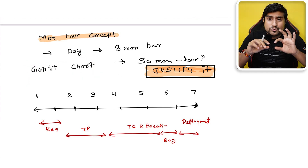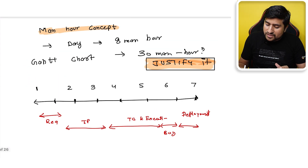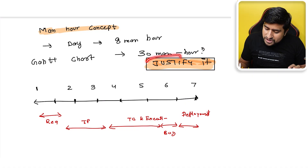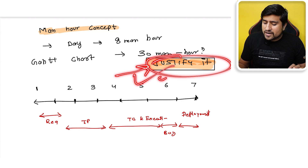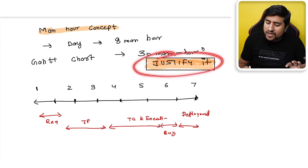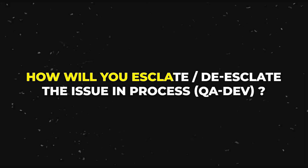This is called a Gantt chart — make sure you read about how to give estimates on a timeline basis. You have to justify your answer: how many resources it will take and what the man-hours are. That is how you give a proper estimate for a project.